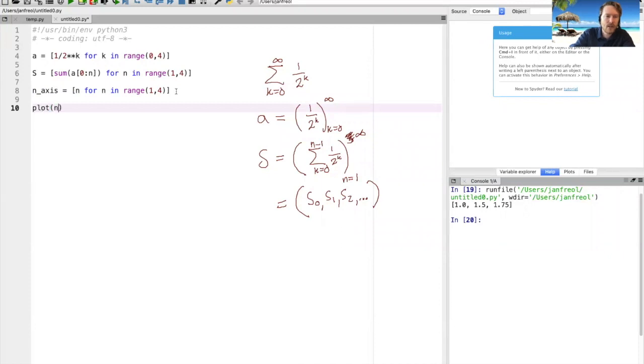Now I can write here plot N_axis, then my S. This will be the values I look at on the X axis, this will be my Y values that correspond to these, and then to get blue dots I do 'bo'.